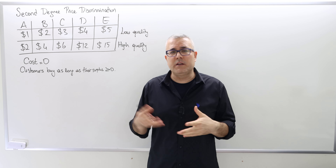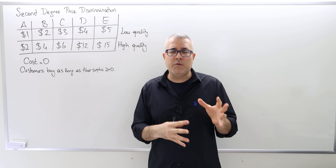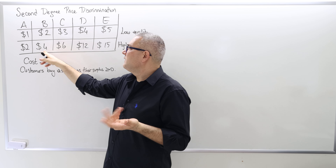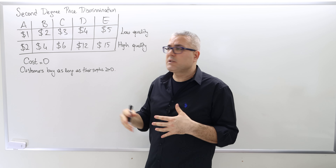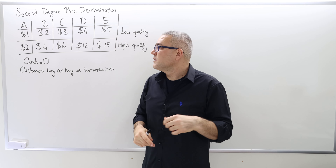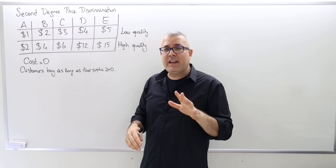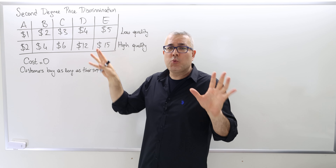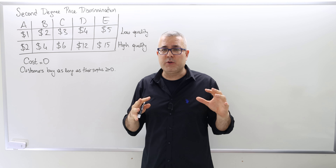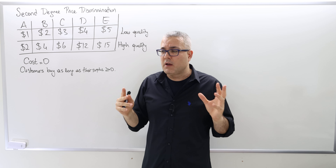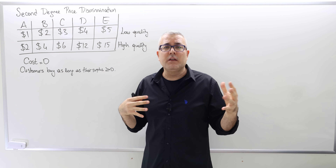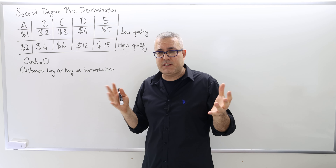For example, consider a cell phone — a high quality and low quality version. I know that some customers' willingness to pay will double for the high quality, like customers A, B, and C. But some other customers' willingness to pay will triple — D and E's willingness to pay increases three times. So the question is, even though I cannot distinguish which customer is which, I can produce two different products. This is the first time we're talking about a monopoly with more than one product, differentiated here by quality.